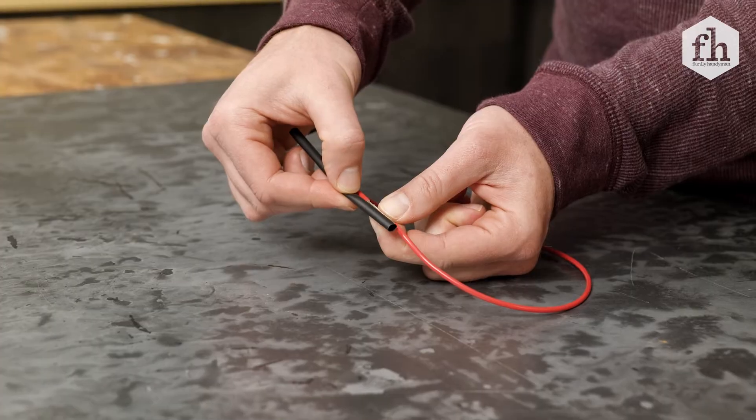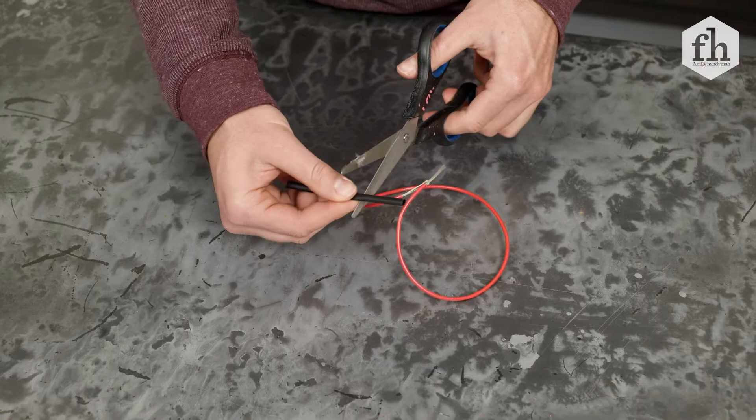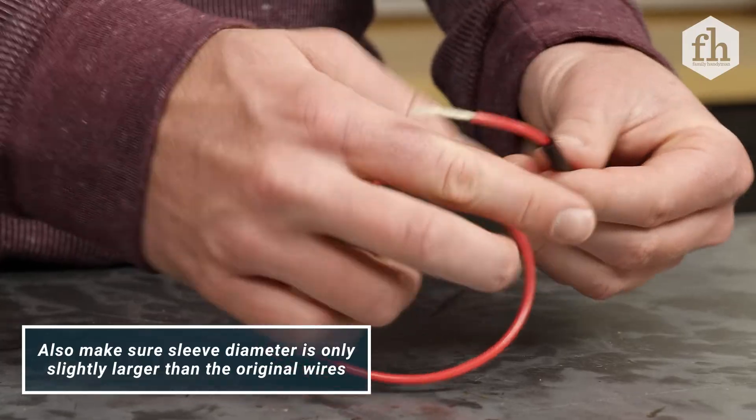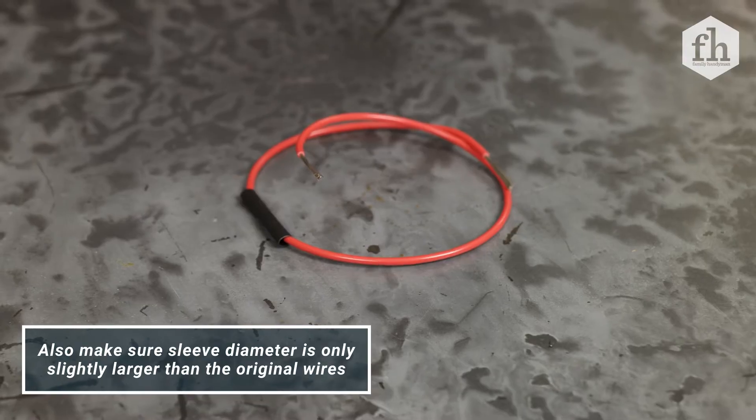Cut a new heat shrink tube sleeve with scissors so it's slightly longer than the open wires you'll be soldering together. Slide the sleeve over the metal wire until it is completely out of the way.